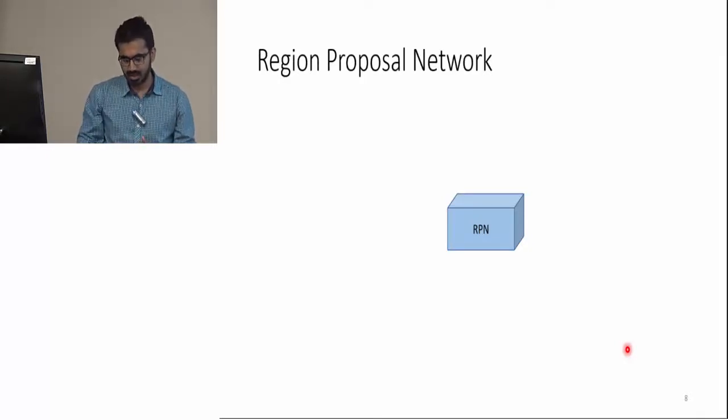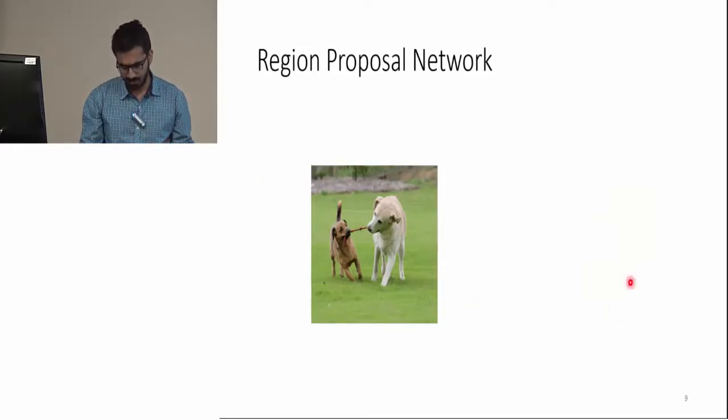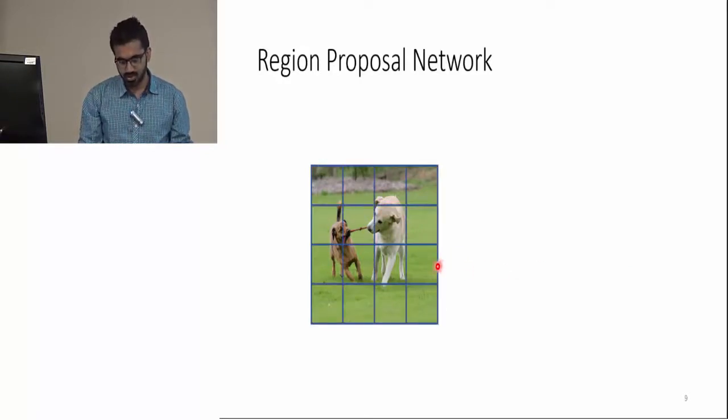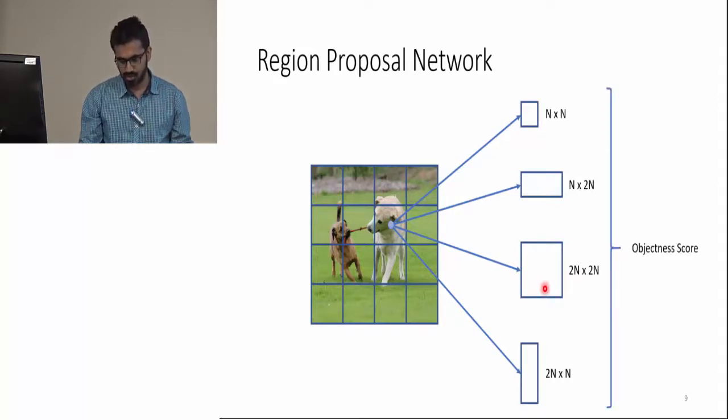Now let's discuss the region proposal network, which was introduced in Faster R-CNN. For a given image, it's the job of the region proposal network to propose good object candidates. RPN does that by dividing the image into cells, then for each cell it evaluates several anchor boxes of different size and aspect ratios and it predicts the object score. Anchor boxes with high object scores are passed forward in the pipeline.